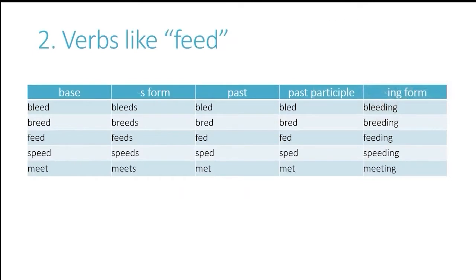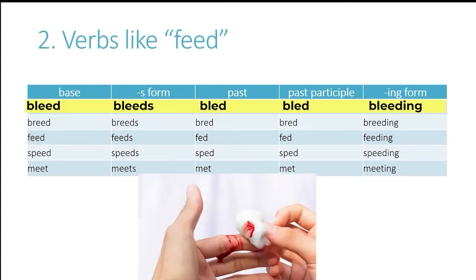Let's look at some examples. In the base form it has the long e sound, and in the past and the past participle, verbs like these have the short e sound. So you can see how it goes. Bleed, bled, bled.